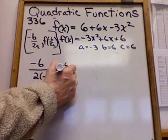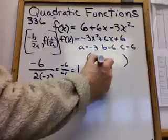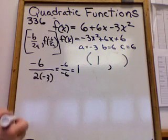Minus 6 over minus 6, positive 1. So the first point in my vertex is a positive 1. That was pretty easy.